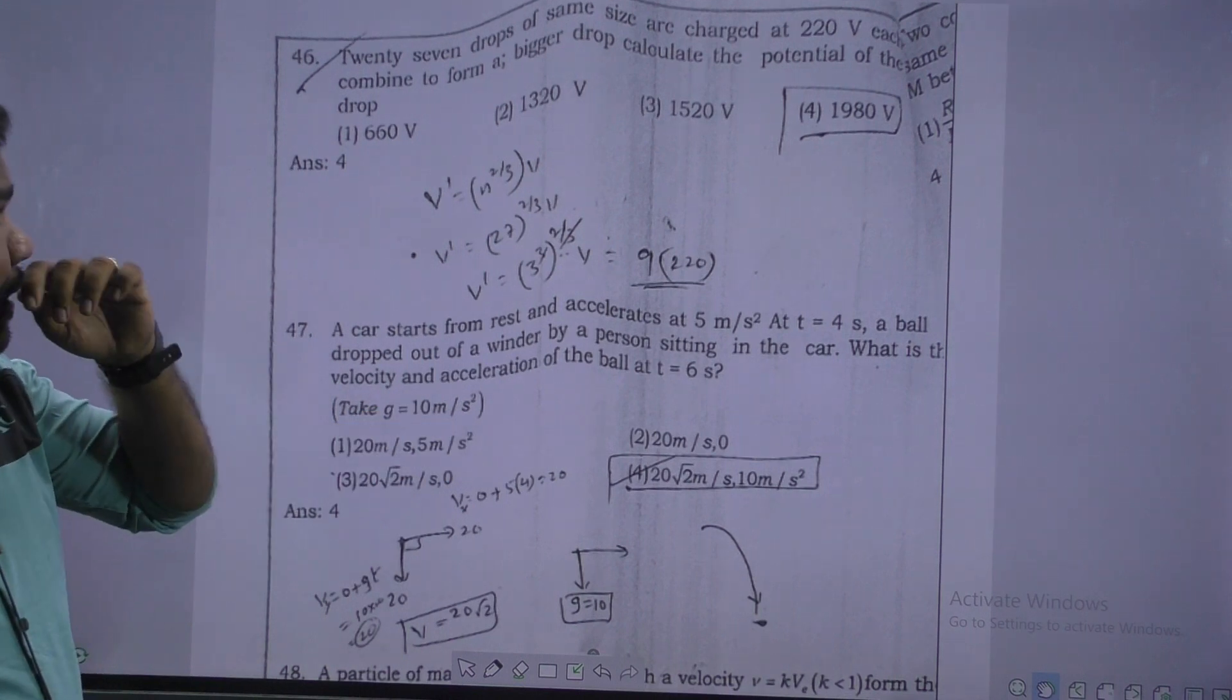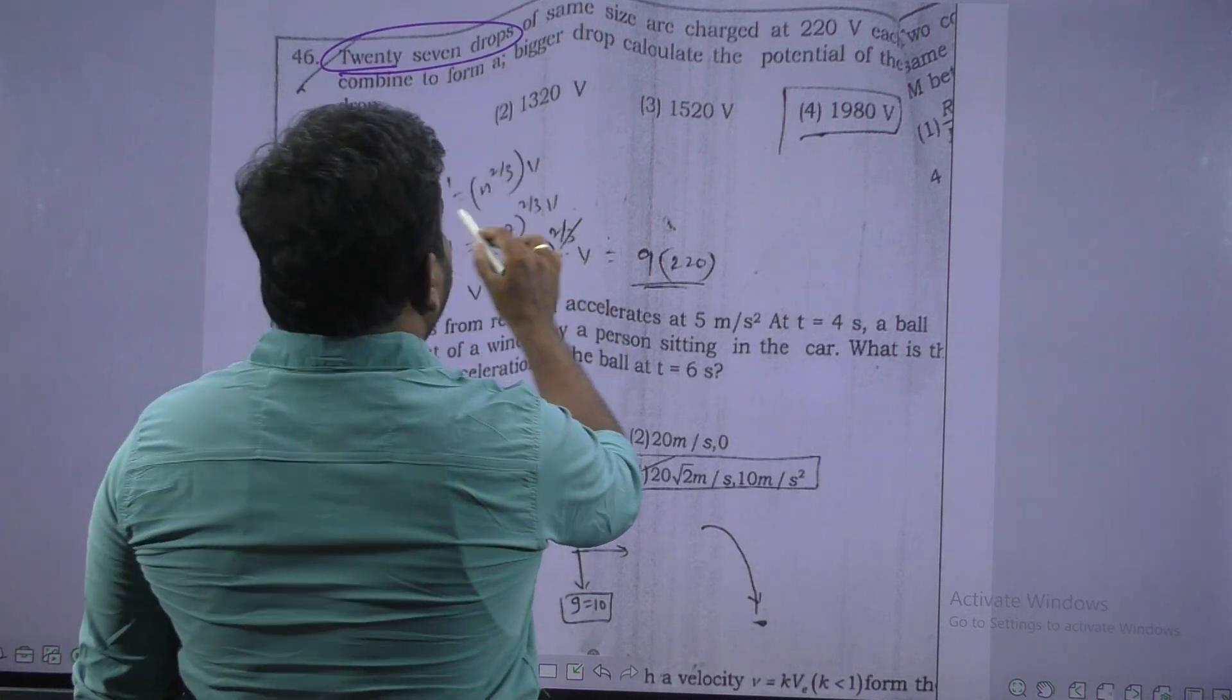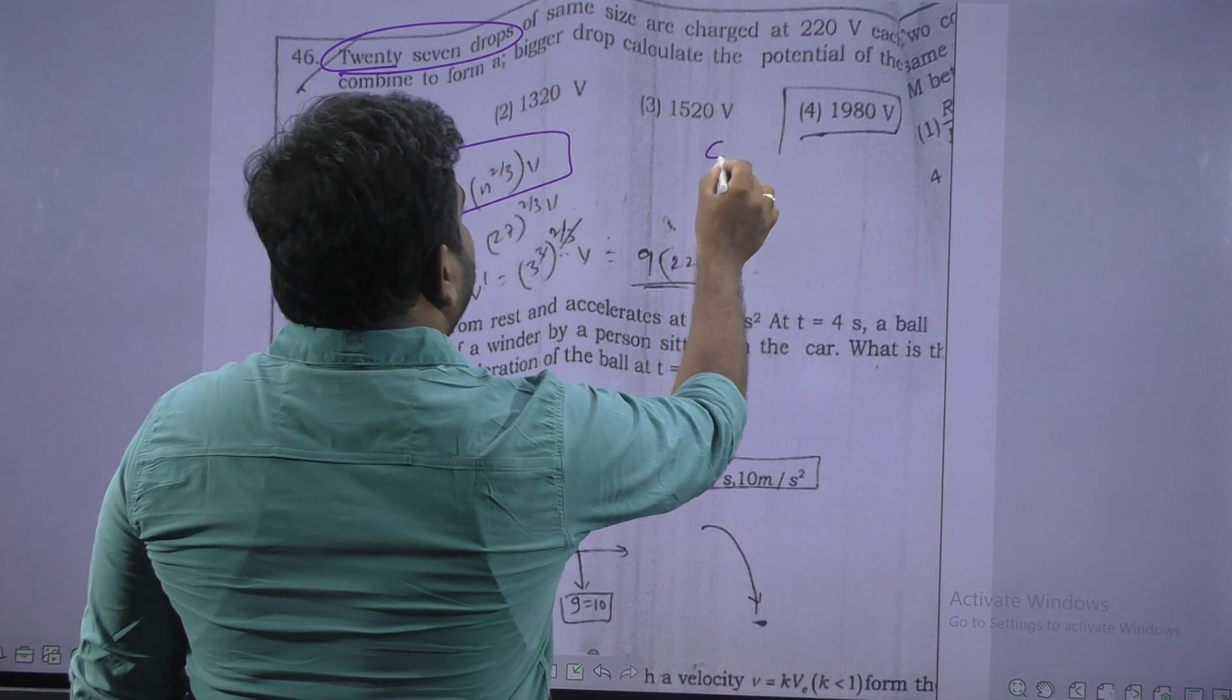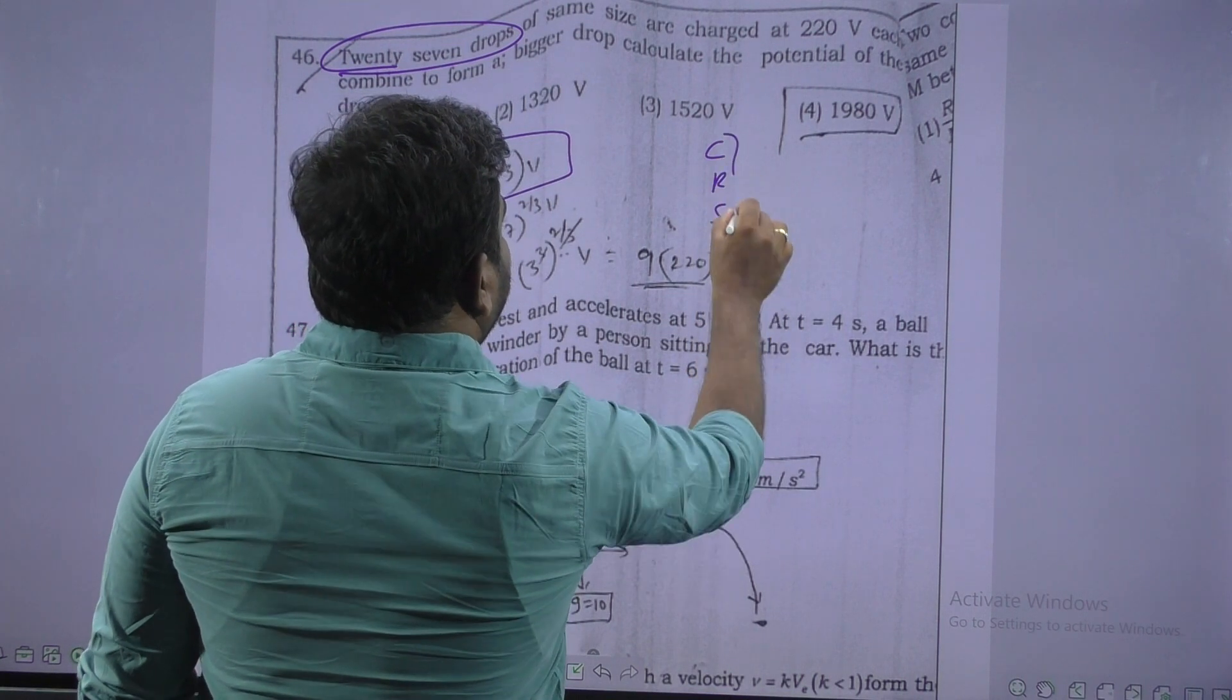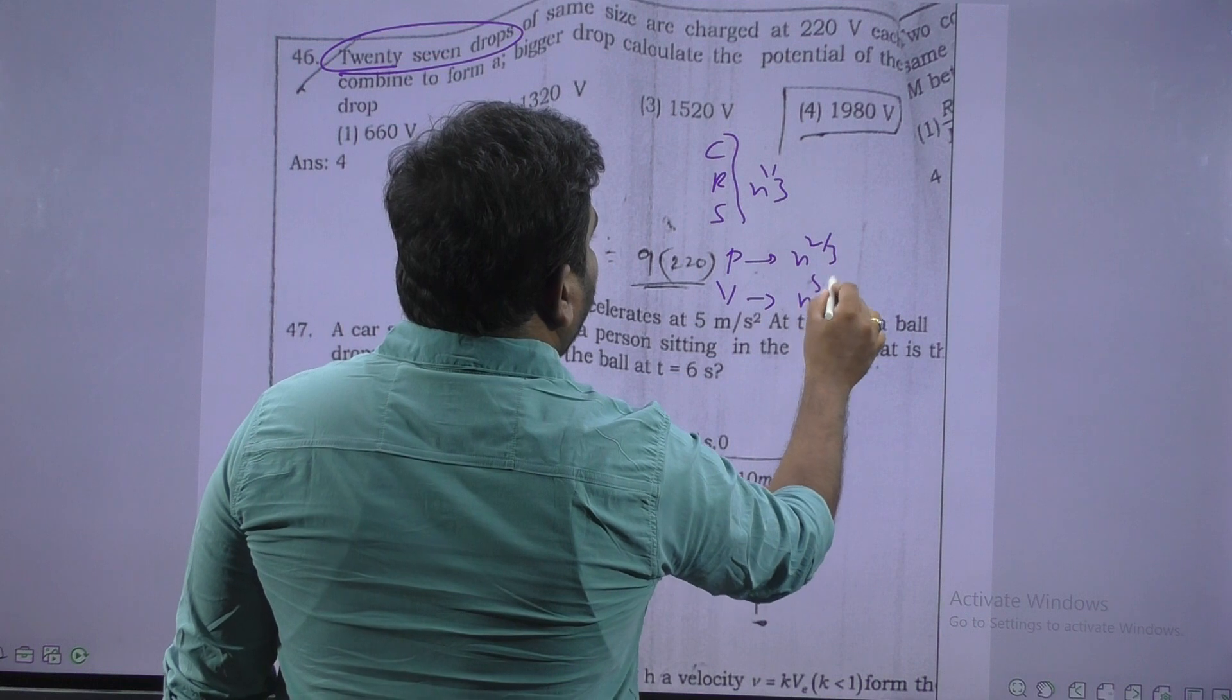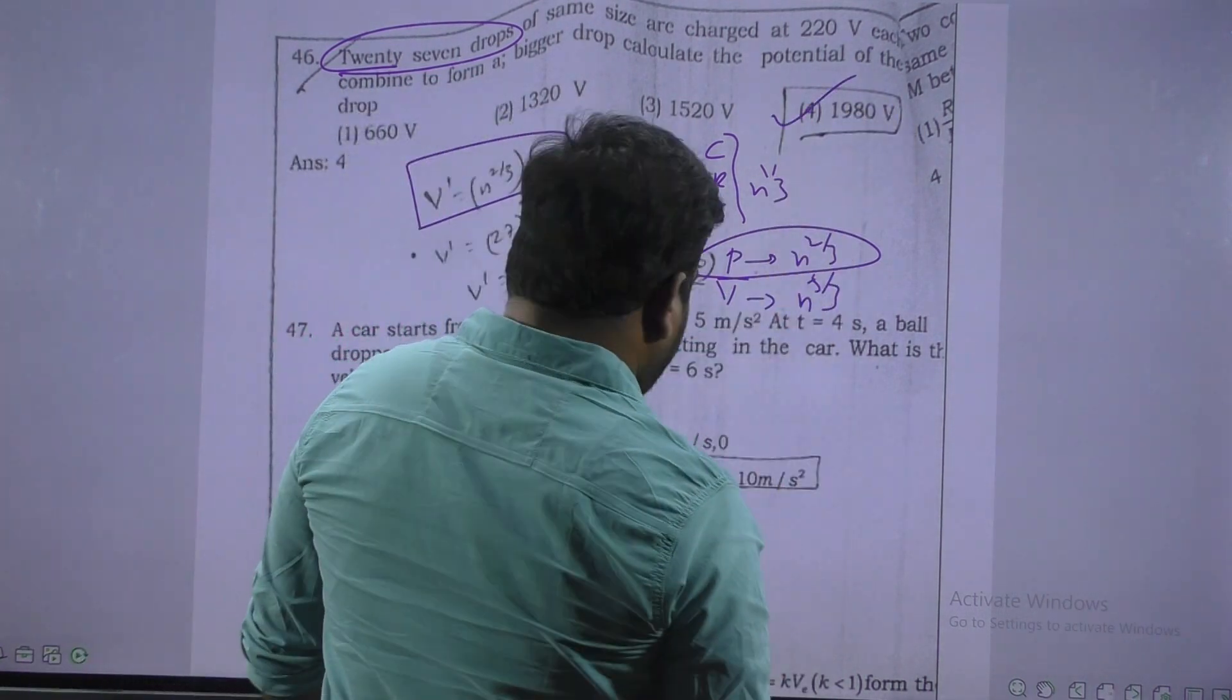Next. Look here this is droplets are combined. How many? 27 droplets are combined. We know droplets combined formula. Bigger potential is equal to N power 2 by 3 into smaller potential. For CSR power should be 1 by 3, potential should be N power 2 by 3, energy should be N power 5 by 3. Just apply we get 9 times.